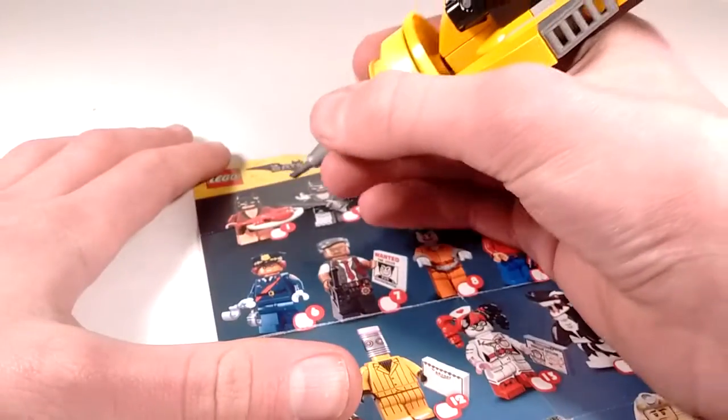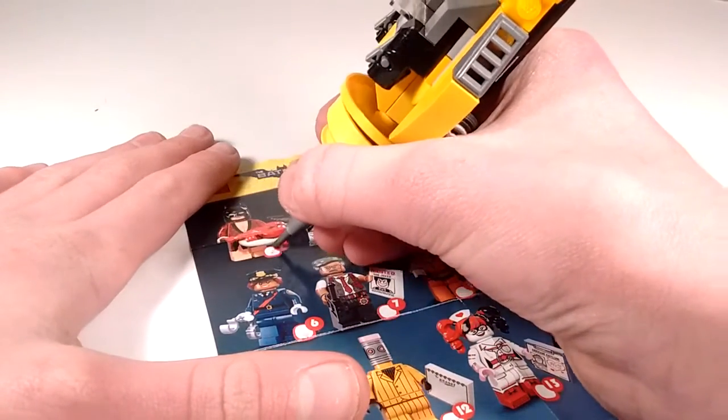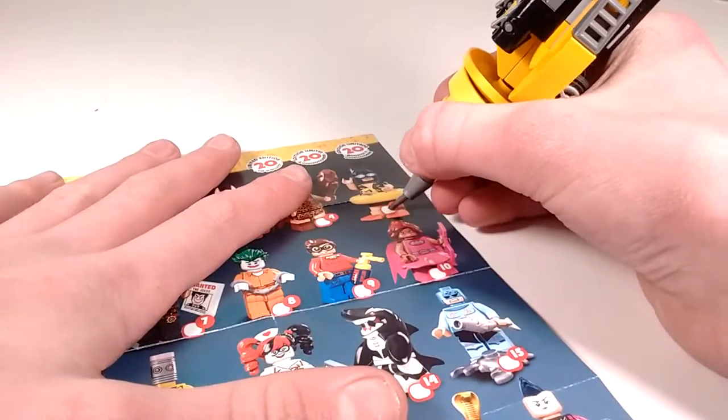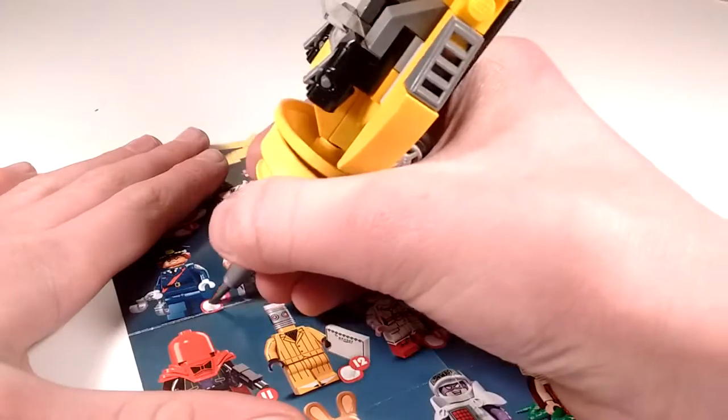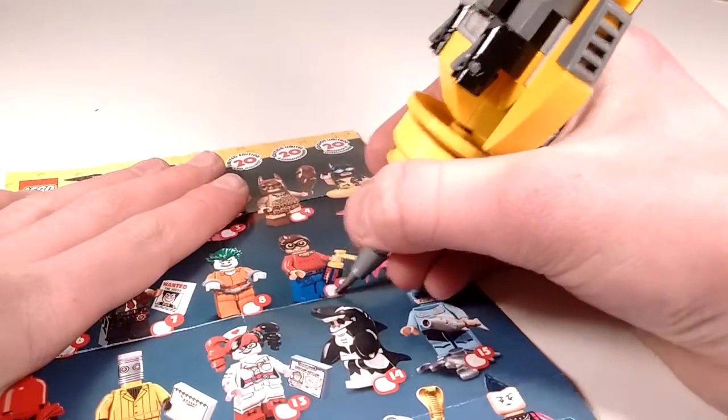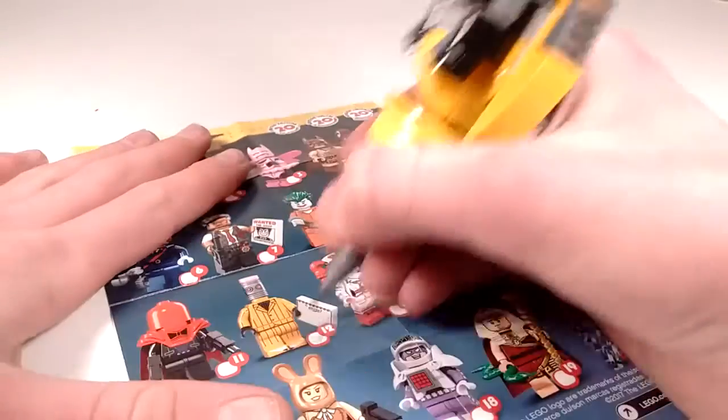Alright, time to check off some of the LEGO Batman movie minifigures they got: Lobster Loving Vacation Batman, my favorite, Police Barber Gordon, Dick Grayson Robin, and the Eraser.